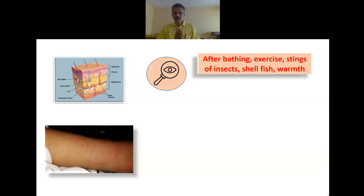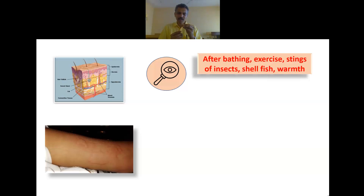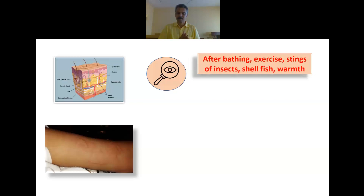Each individual, based on his susceptibility, may be sensitive to a particular substance. In Artica Urans, what brings on urticaria? There are five to six ailments you should remember. Urticaria in Artica Urans typically starts after bathing, exercise, stings of insects, shellfish, or worms. These are the five causative factors which can give rise to urticarial eruptions in Artica Urans.